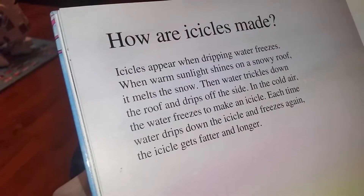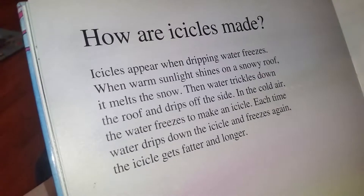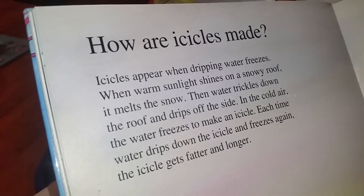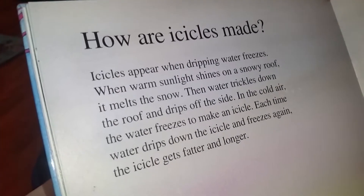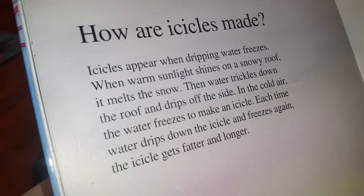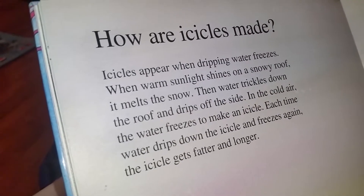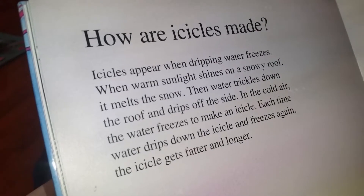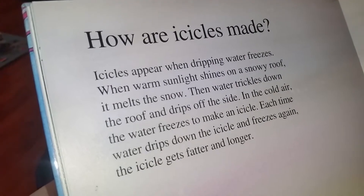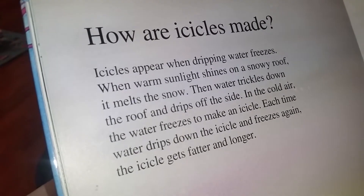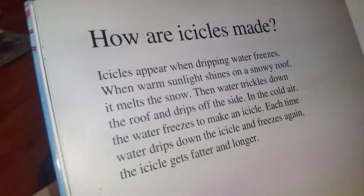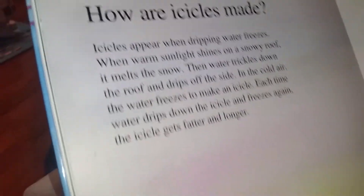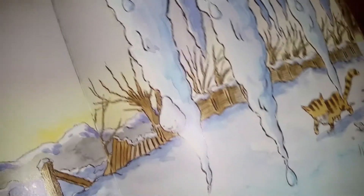How are icicles made? Icicles appear when dripping water freezes. When warm sunlight shines on a snowy roof, it melts the snow. Then water trickles down and drips off the edge. In the cold air, the water freezes to make the start of an icicle. Each time water drips down the icicle and freezes again, the icicle gets longer. You can see that on our window.